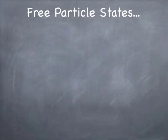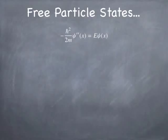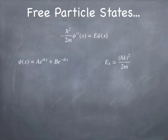Free particle states are pretty easy — we've actually already dealt with them when we did the traveling wave in project 2. The Schrödinger equation when the potential is equal to zero is simply that the second derivative of the wave function equals minus k squared times the wave function. The solutions turn out to be traveling waves moving to the right or the left. The energy that corresponds to a particular value of k is just the kinetic energy: momentum squared divided by 2m, which is ℏ squared k squared divided by 2m.